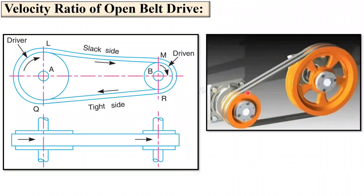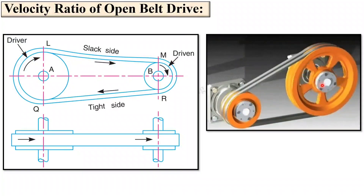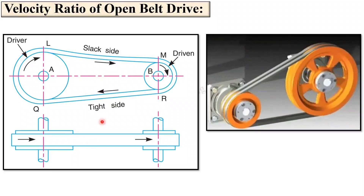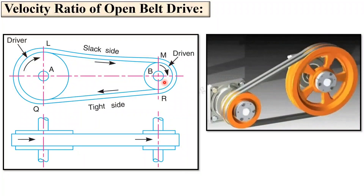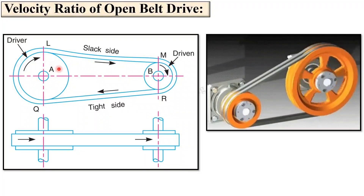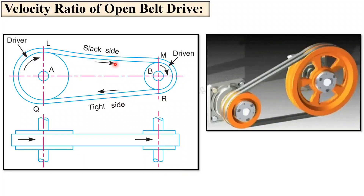Here in this figure you can see this is the open belt drive arrangement, where power is transmitted from one shaft to another shaft and both shafts have the same direction. In this figure you can also see two different views so that you can understand the arrangement exactly. Both shafts are parallel to each other and both have the same direction. Here you can see this is the driver — it will pull from this direction because it is rotating in the clockwise direction. So this will be the tight side and this will be the slack side.